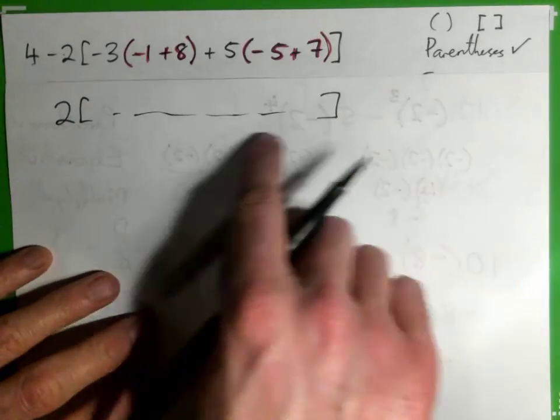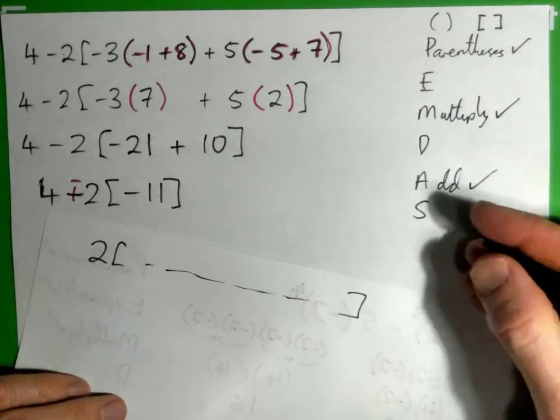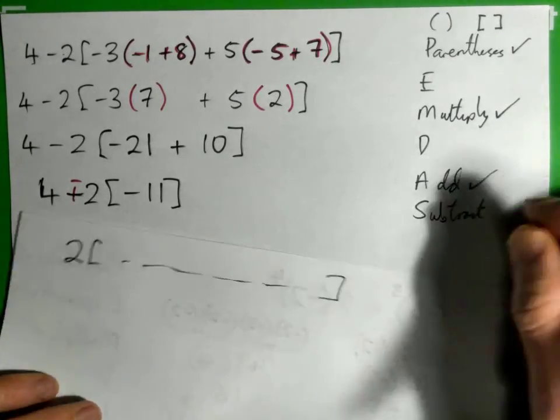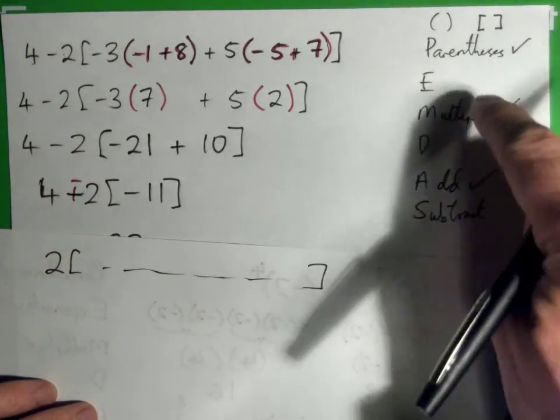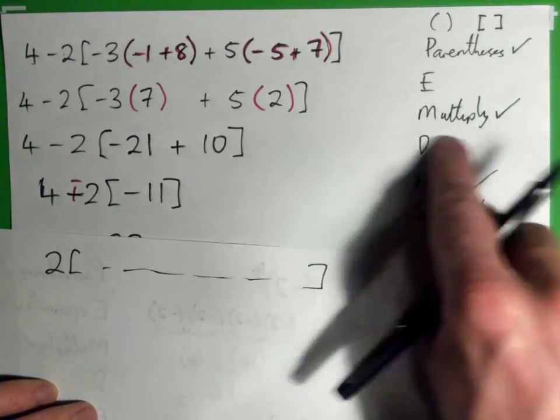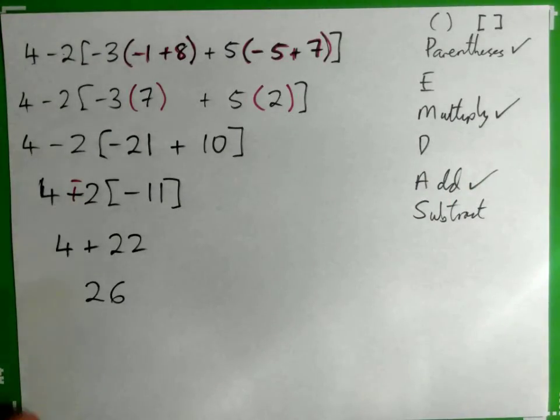So that is subtracting first, and that comes at the end. So following PEMDAS, I've got to do parentheses, exponents, multiply, divide, add, subtract from left to right. So that's the problem there. Perfect. So it's not right.